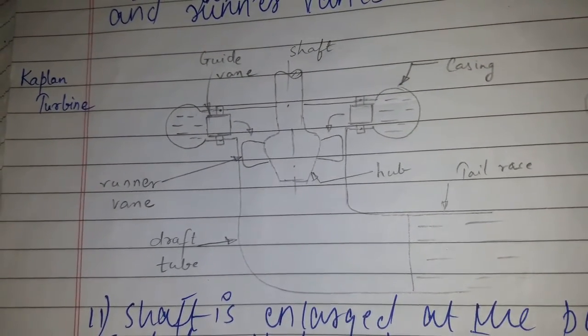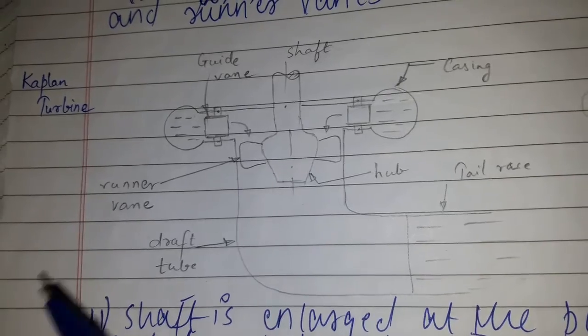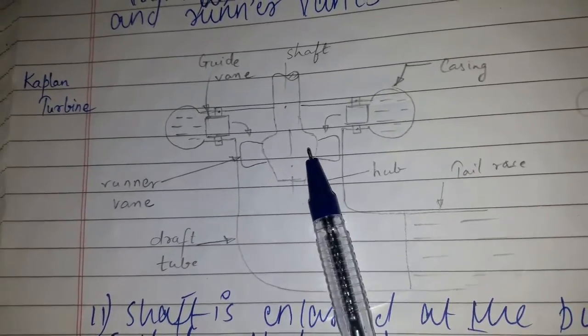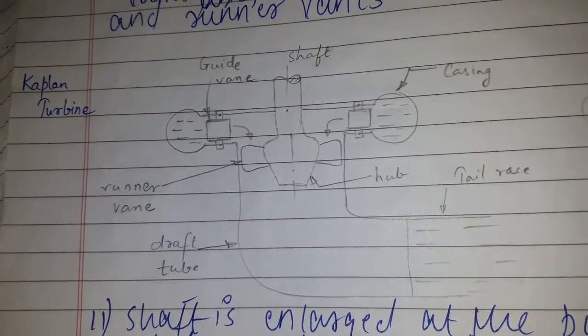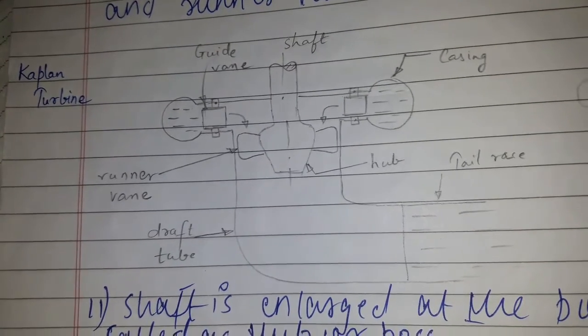Kaplan turbine has very few moving vanes, and hence the frictional resistance is reduced due to less surface contact of water with the vanes.